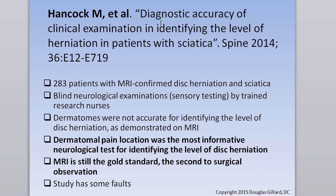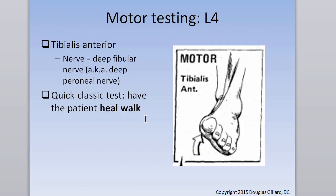Definitely read through the Hancock study. Some of the most important diagnostic pieces will come from the history. If the patient complains of specific dermatomal pain — for example, 'it feels like someone poured hot acid on the top of my foot' — you immediately think L5 nerve root problem. According to this study, that's actually more accurate than dermatomal testing, reflex testing, and muscle testing. Always include a pain diagram in your new patient packet.